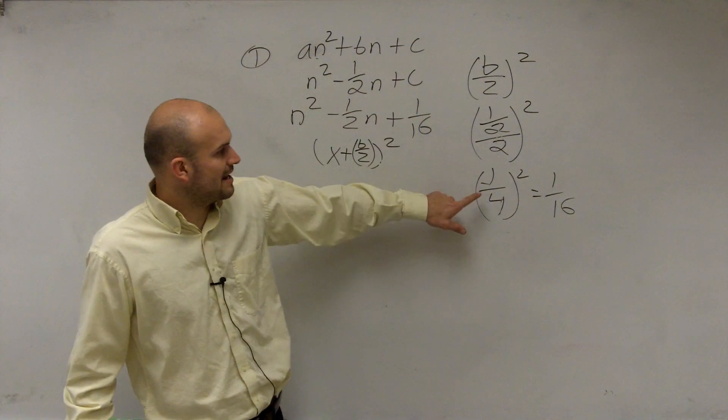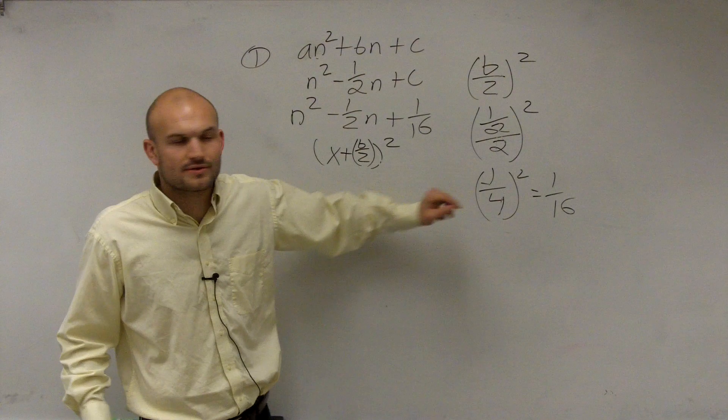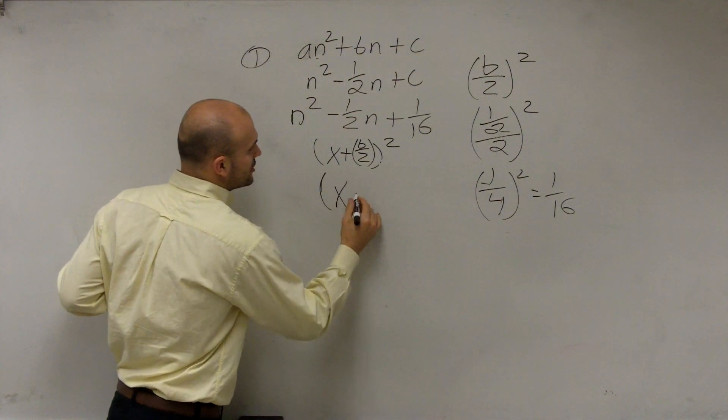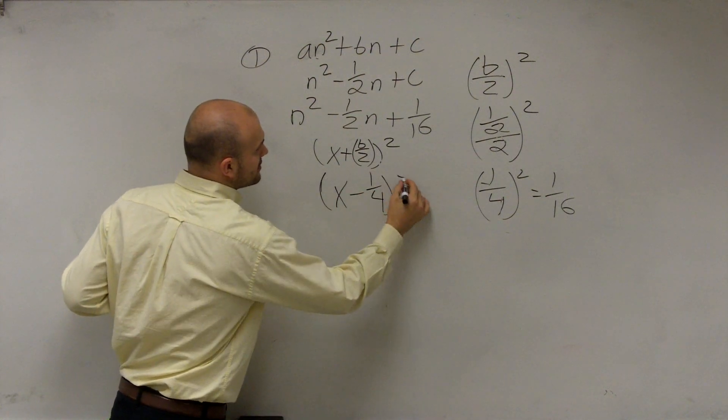Well, we figured out b divided by 2 is a negative 1/4. So therefore, my final answer for part 2 is x minus 1/4 squared.